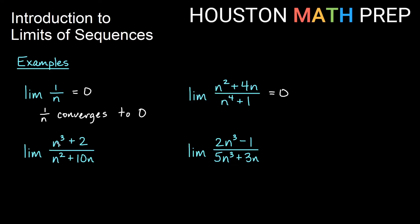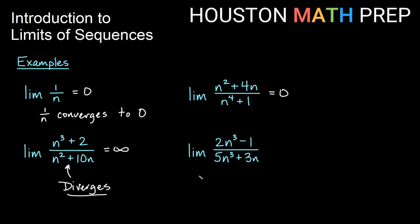Looking at the bottom left, the limit of n cubed plus 2 over n squared plus 10n. This is a different story. We have a higher degree polynomial on top than on the bottom, so the numerator is going to grow more quickly. That means our limit is going to be infinite, and so we would say that this sequence diverges — it's going to get larger and larger as our term numbers get bigger.